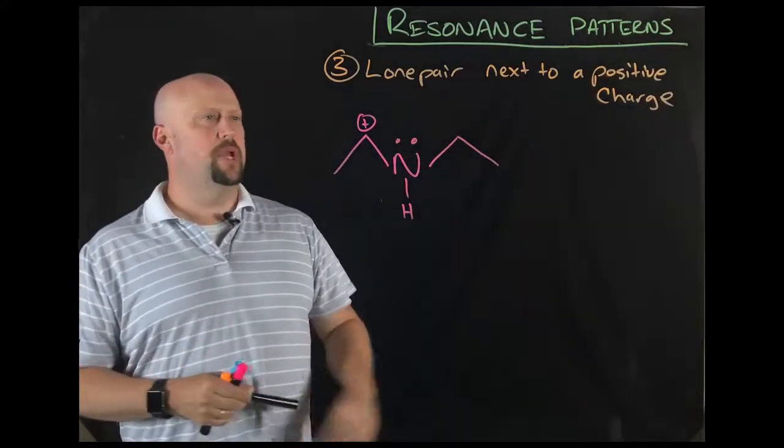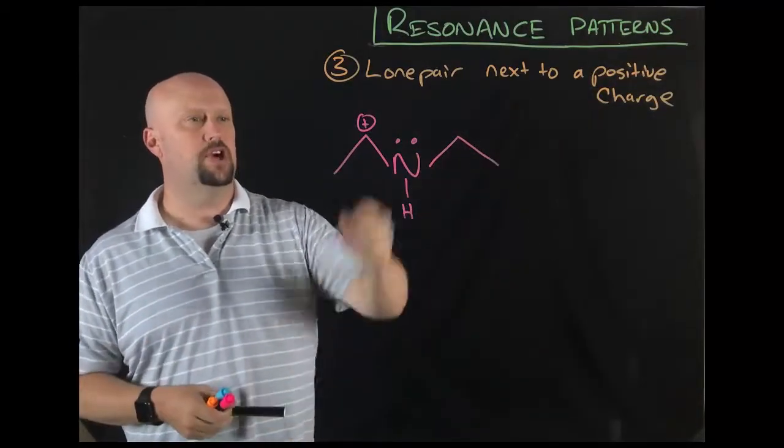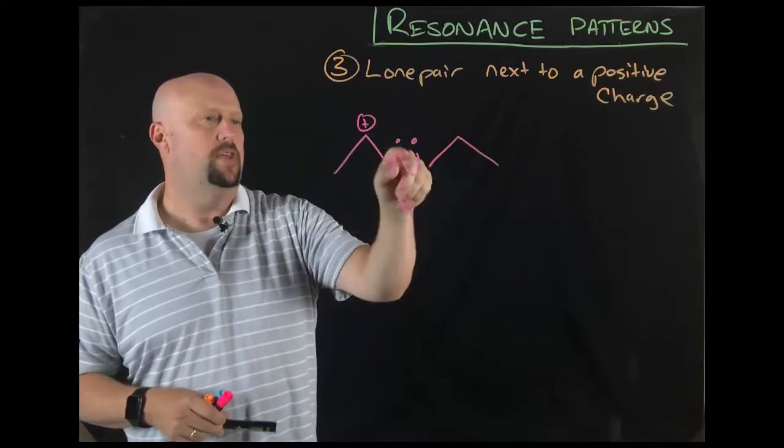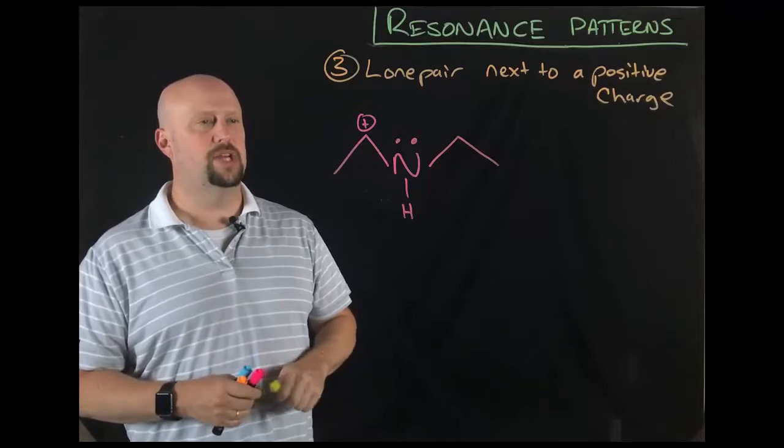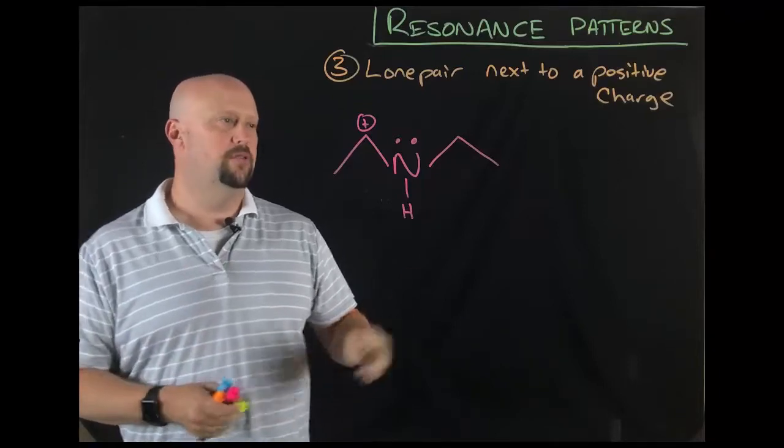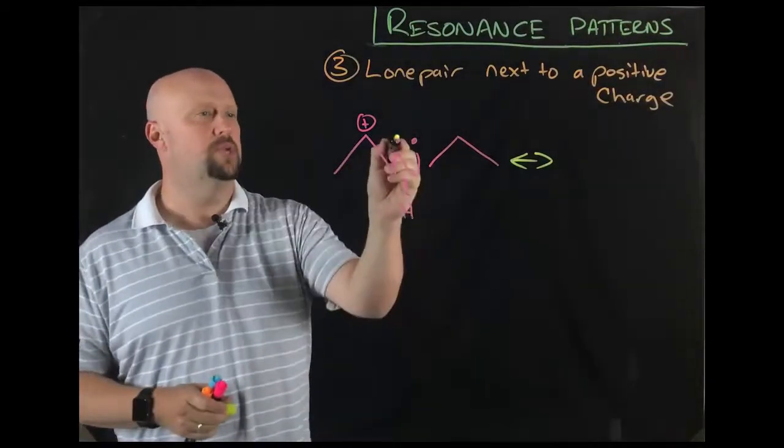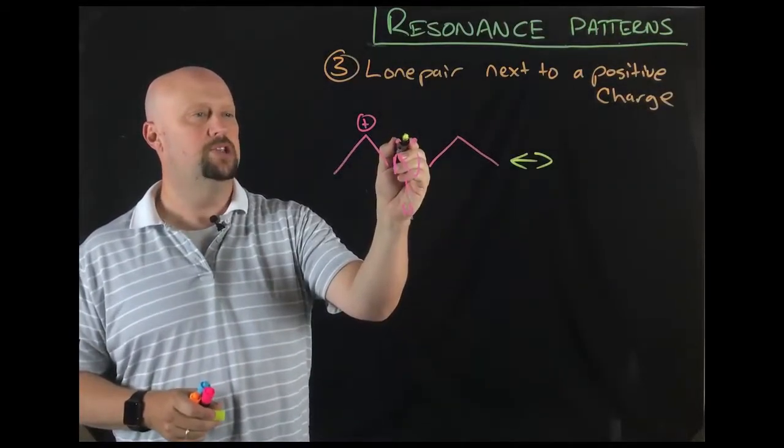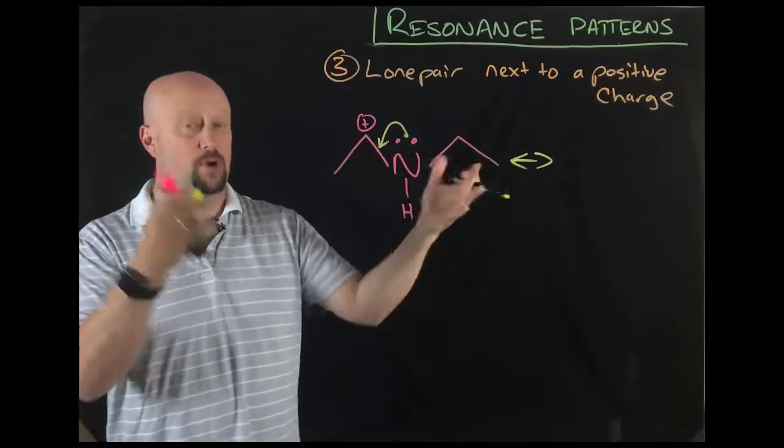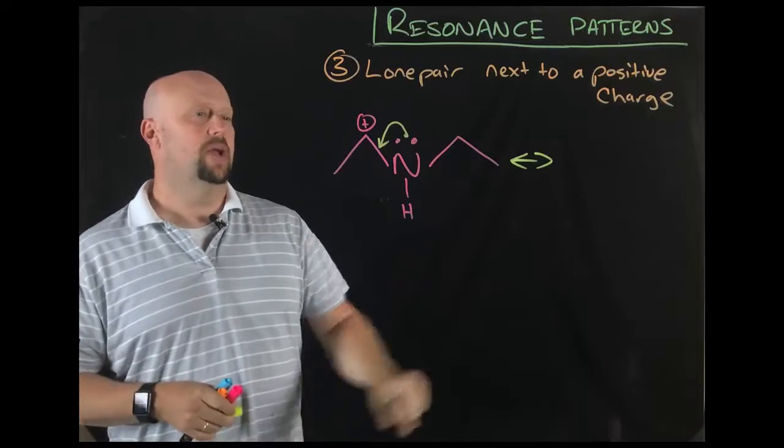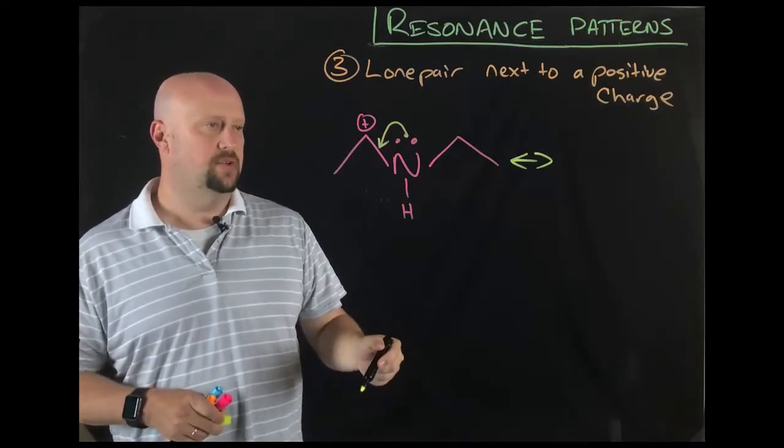All right, so pattern number three, lone pair. Next two are adjacent to a positive charge, so there's a positive charge here. On the next atom over, there's a lone pair there. That pretty much always indicates some sort of resonance. What do we do then for a resonance structure? Well, again, we're going to draw our resonant arrow. And then what we're going to do here is we're going to take that lone pair. Generally speaking, if you have lone pairs, they're pretty likely to be something that's going to shift or something that we're going to represent as shifting. So that's going to move to here. What is that then going to do to the situation?